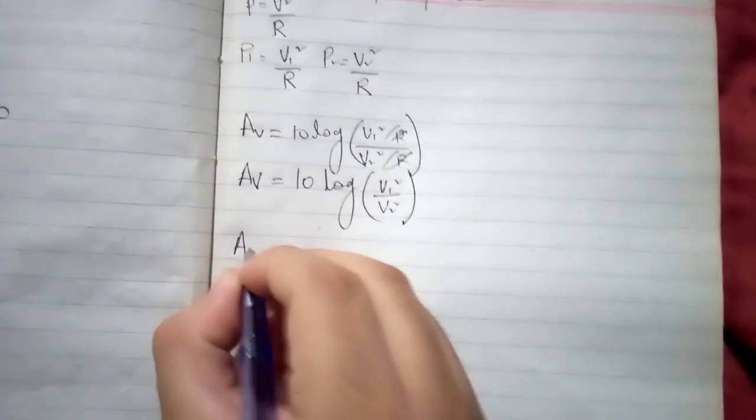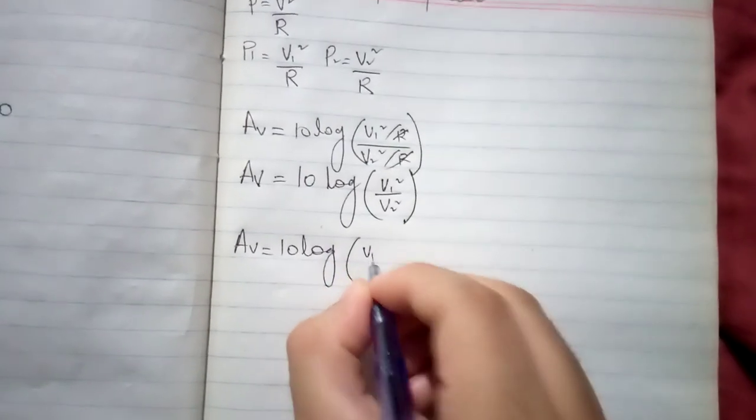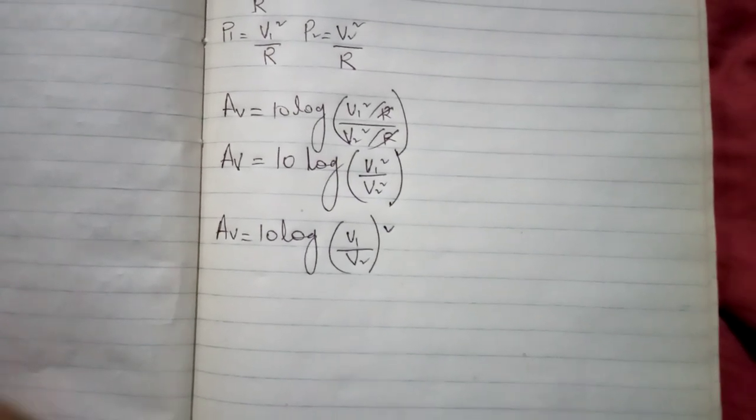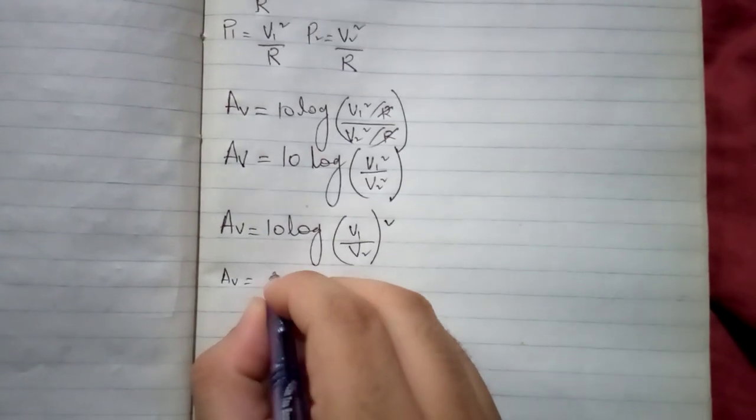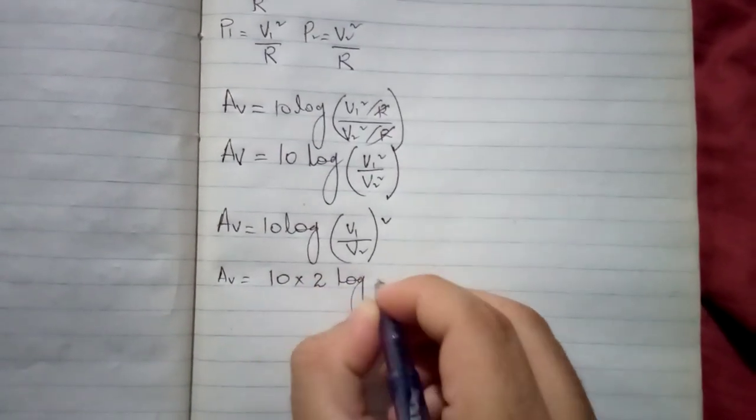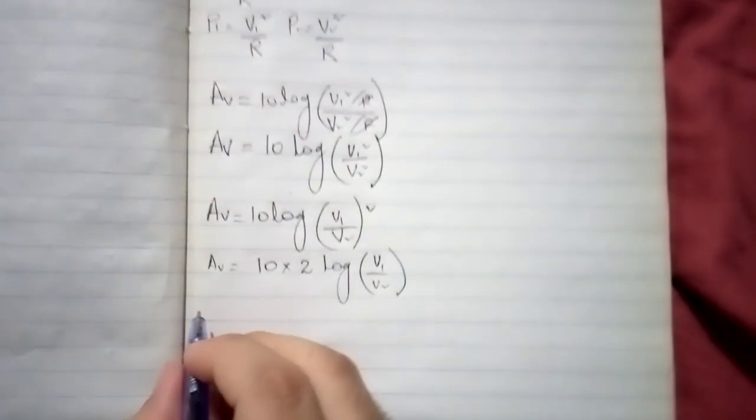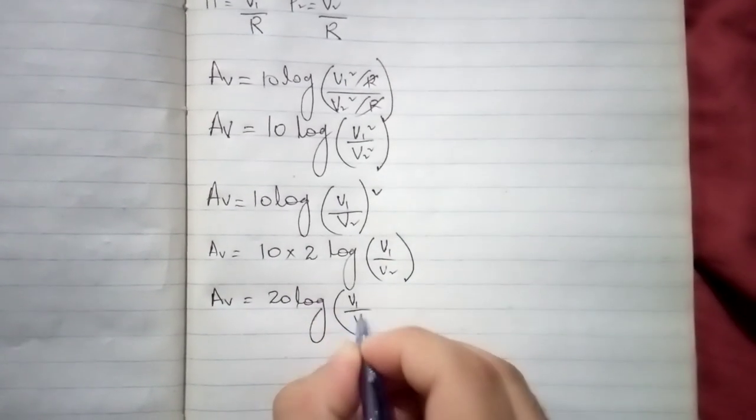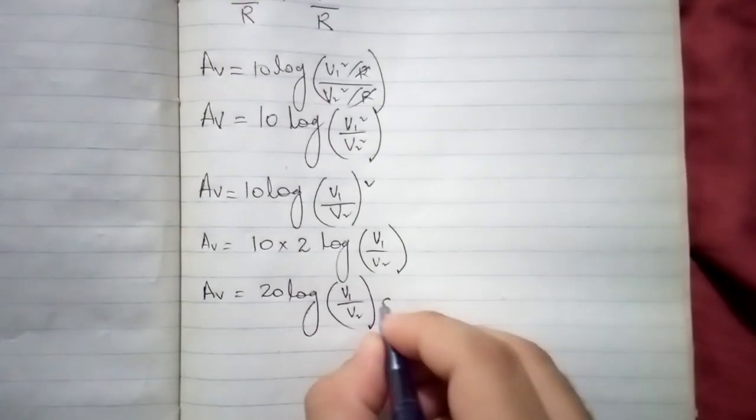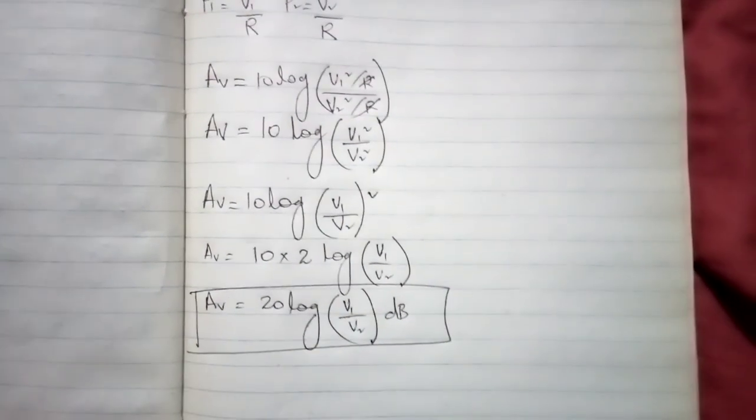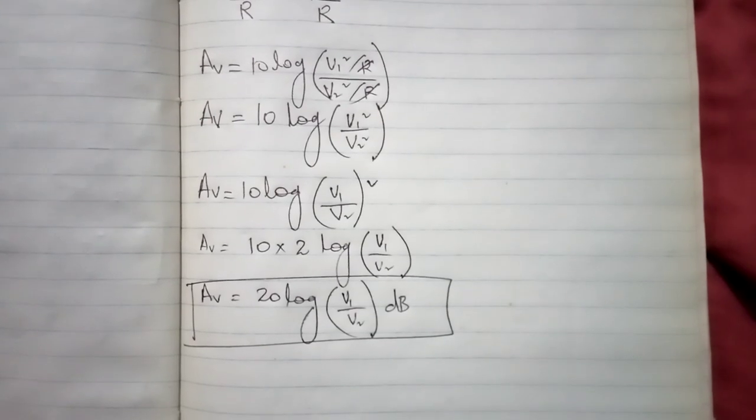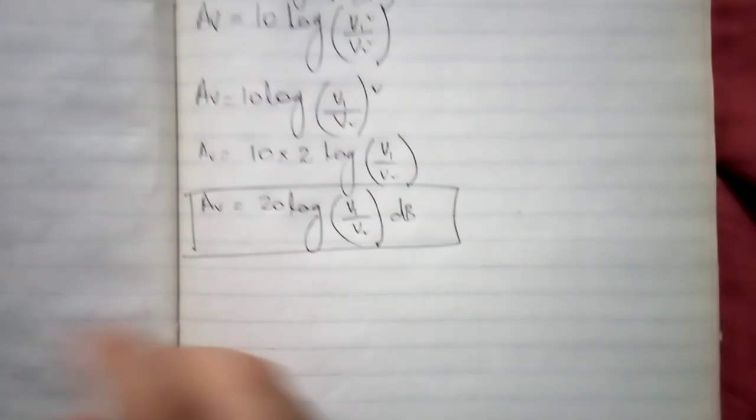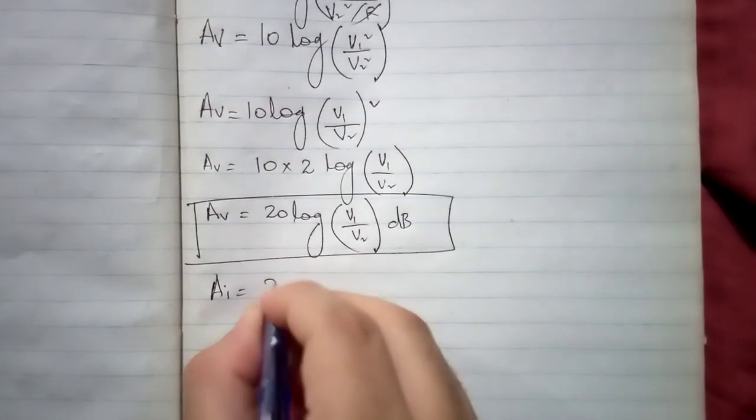Now take the common square, so it will be 10 log V1 upon V2 whole square. This is the property of log, the power comes as a coefficient, so it will be 10 multiplied by 2 log V1 upon V2, and 2 multiplied by 10 is 20. So the formula of voltage gain is 20 log V1 divided by V2, and the formula for current gain is 20 log I1 divided by I2.